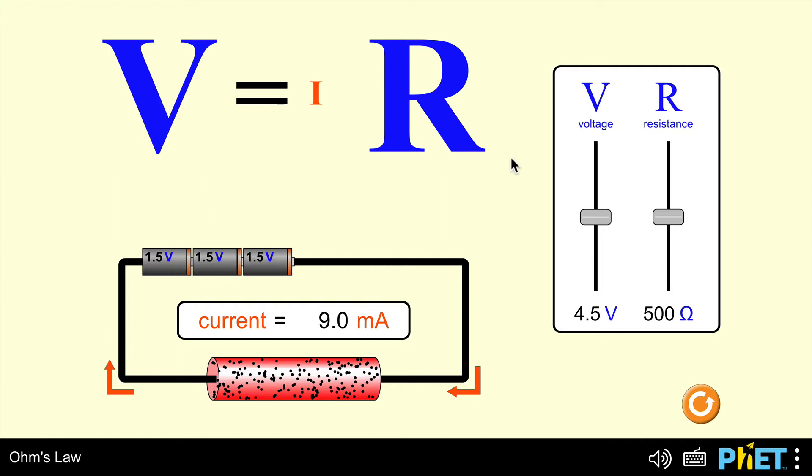Now a fairly simple looking animation here. What you can actually see is, if I was to increase the voltage, now at the moment the voltage is four and a half volts, you can see here that that's because I have three of these 1.5 volt cells, so I have a battery of cells. Three of them in series, so of course that makes a total voltage of 4.5 volts.